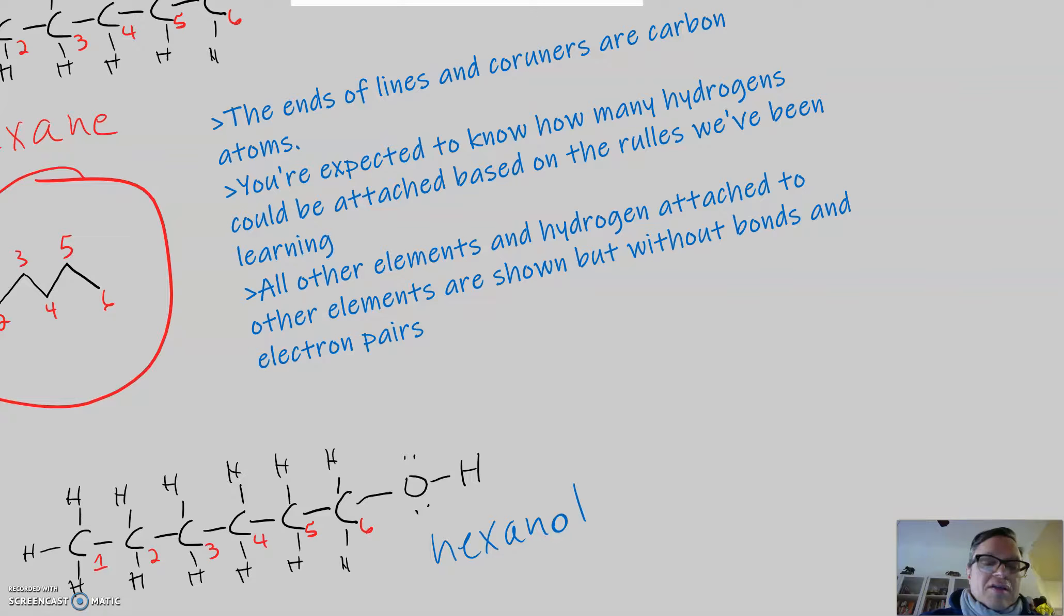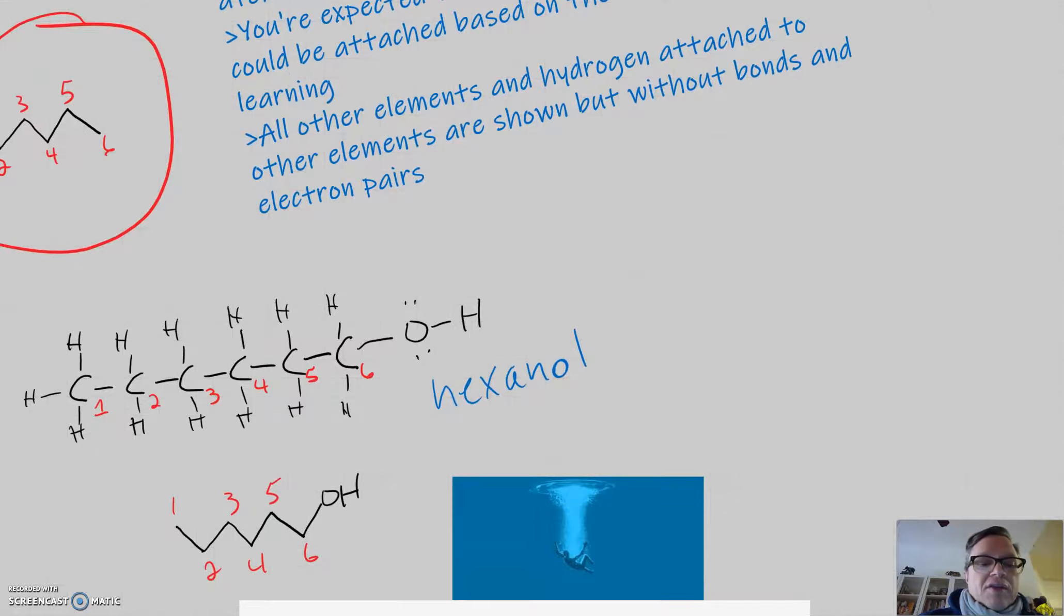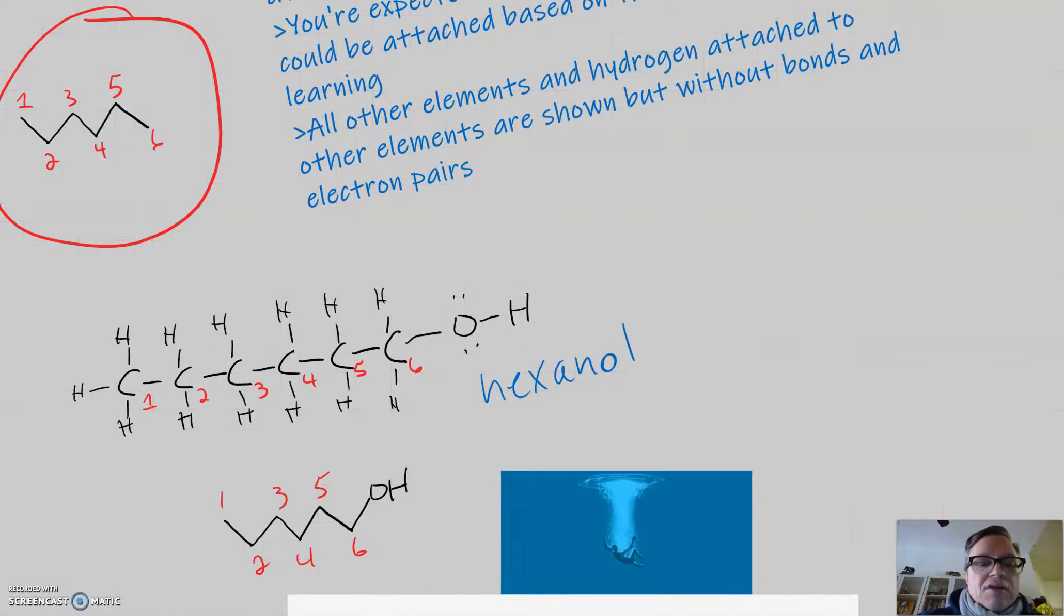So, let's turn hexane into hexanol by adding an oxygen and hydrogen to the end of it. And so, that structure would look like this. It's pretty similar. One, two, three, four, five, six carbons. And then we extend the line here to include the oxygen and the hydrogen. We don't need to put a line between the oxygen and hydrogen. We don't need to put the lone pairs on oxygen. That's all understood.